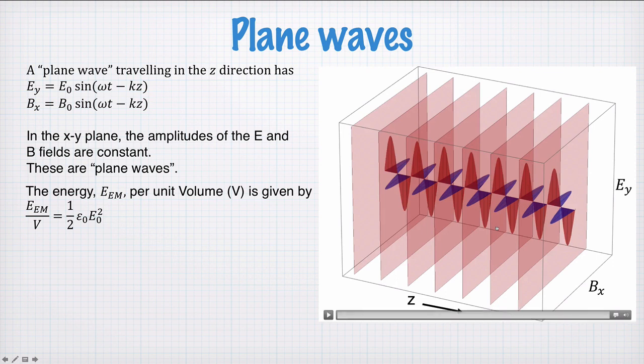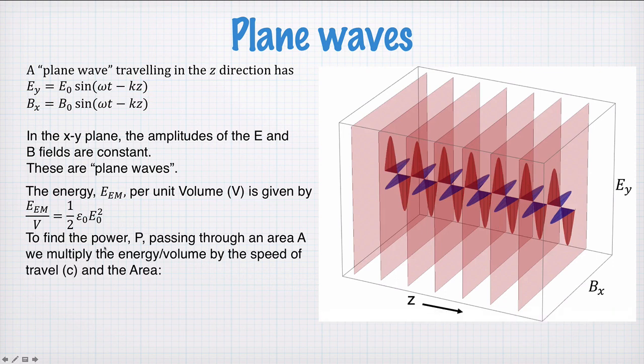Now I said power is being carried through the end of this box. Let's calculate the power. So to find the power passing through some area A, which might be the area of the end of this box here, we multiply the energy per volume by the speed at which this energy is travelling and the area that you've got the energy travelling through. So that would be the power, half ε0E0 squared times the area times the speed of the wave.